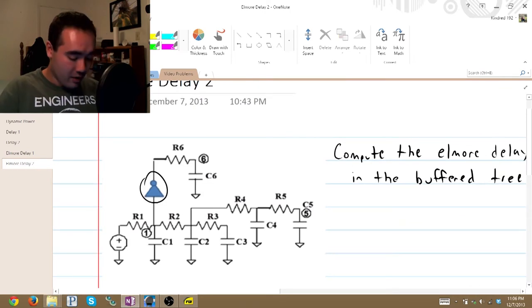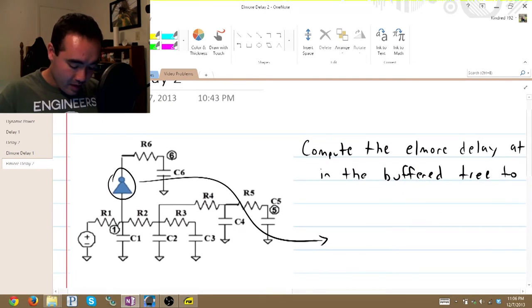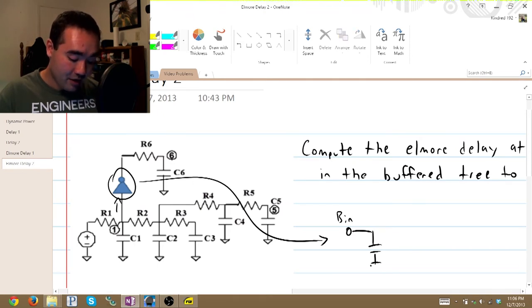This buffer right here can be redrawn as, we'll go ahead and call this the input side. So BN for buffer in. There is a parallel capacitance to ground, which I'll call CN.